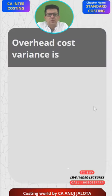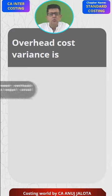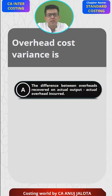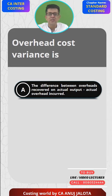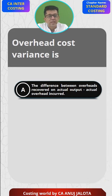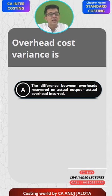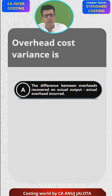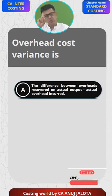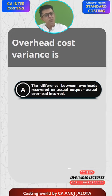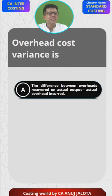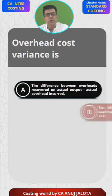Overhead cost variance — okay, so bring out the four options. Option A: the difference between overheads recovered (meaning absorbed) on actual output minus actual overheads incurred. When I read option A, I think: when they are asking overhead cost variance, it must be fixed overheads cost variance, because the word 'recovered' has come — recovered means absorbed. So it must be fixed overheads cost variance, the first variance of fixed overheads.